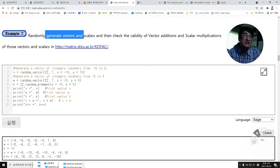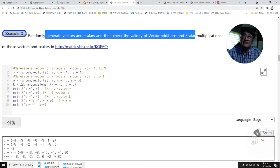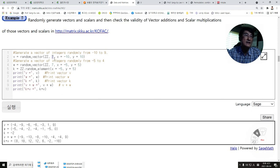Let's try randomly generated vectors and scalars, then check the validity of vector addition and scalar multiplication. Here, we randomly generate vectors of dimension 7 in the range from minus 10 to 9. Let's do the computation.